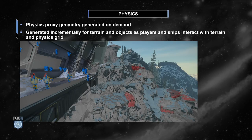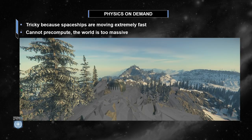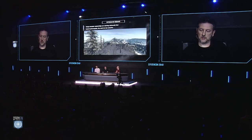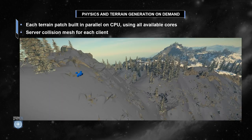Regarding physics: the collision geometry is generated on demand on client and servers when players and spaceships are interacting with the physics grid. Here in light gray you can see the physics proxies generated for terrain, rocks, and objects. Generating physics on demand is tricky because spaceships are actually moving at crazy speeds across the surface, and obviously we cannot store the entire planet's geometry in memory — otherwise it would be terabytes of data. So each terrain patch is built in parallel on CPU, and the workload is distributed by the job system to all available cores. Essentially, the server is building a physical collision mesh for each client.